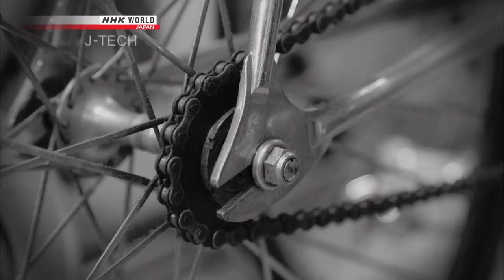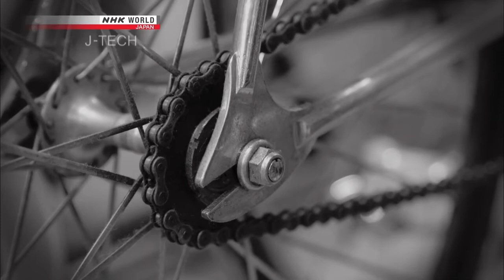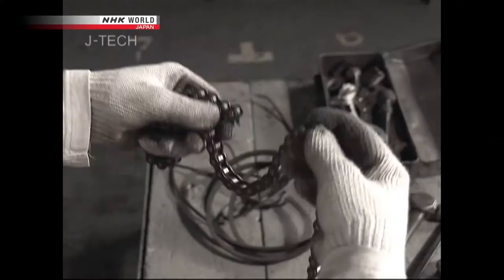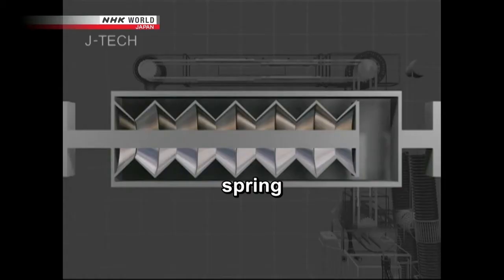One evening, Suzuki caught sight of a security guard pushing a bicycle with a slipped chain. He realized that unless it comes off completely, a chain always maintains its position on the cog. So he tried chains instead of belts. But they too would stretch and slack with repeated use, the result of wear on the linchpins holding the chain together.